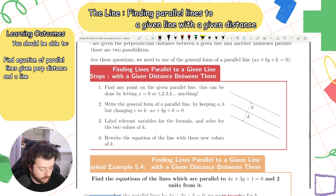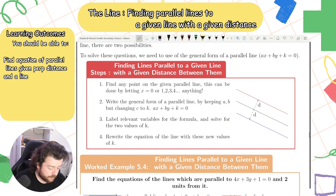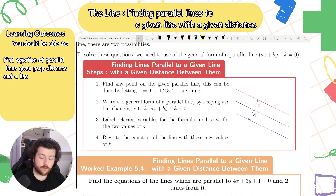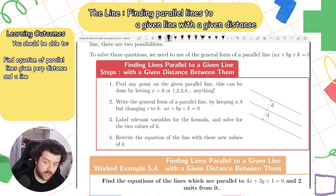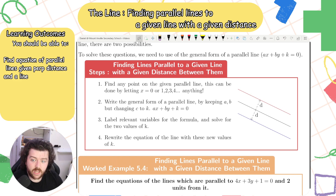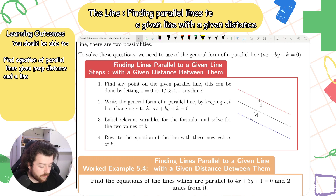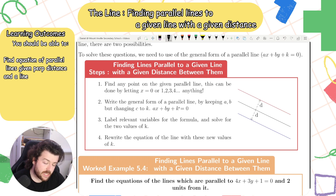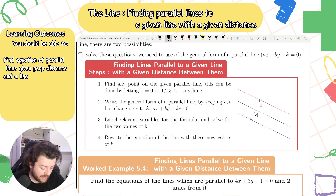So how do we find parallel lines when given a line and a perpendicular distance? First, we need to find a point on this parallel line — any point whatsoever. We then write down the general form of a parallel line: keep a and b the same, so keep ax and by the same, but the constant term must be different. Because they're parallel, the slope is the same, so those two terms stay the same and only the last one is different. We then label all the variables for the formula and solve for k.